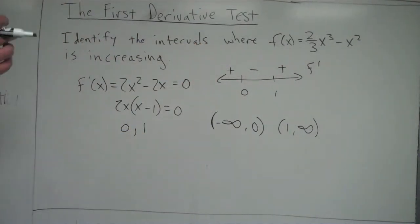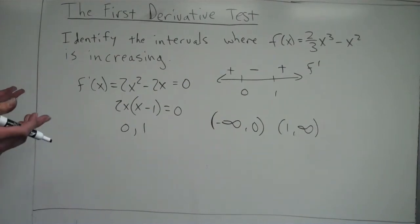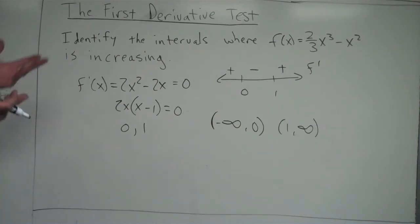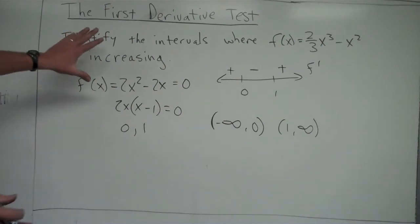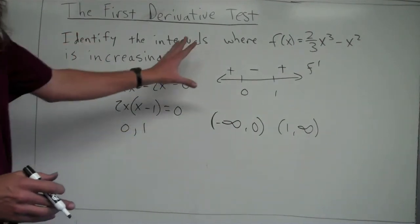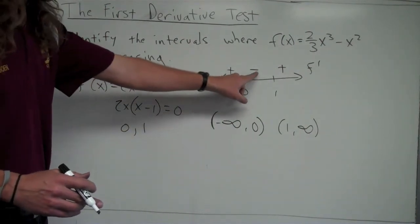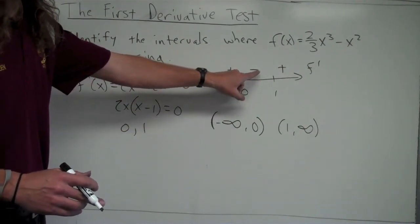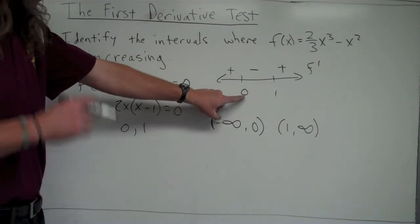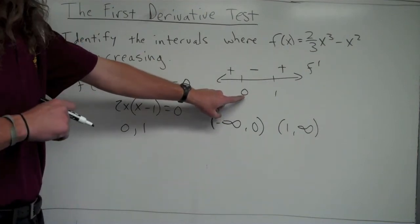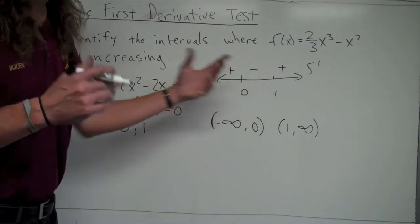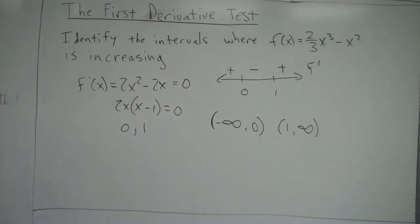If I were to ask you to identify the intervals where f is decreasing, you would do the exact same thing, except you'd look for where f prime is negative — which in this case would be the interval from zero to one. So you'd only have the interval from zero to one where f is decreasing.